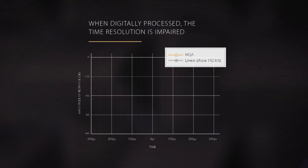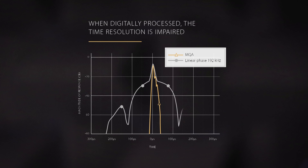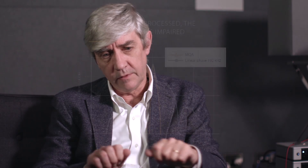What this means is that if a transient comes along, the output starts to build up to that transient and then it decays from that transient. This is very unnatural — there's nothing in the natural world that behaves like that.